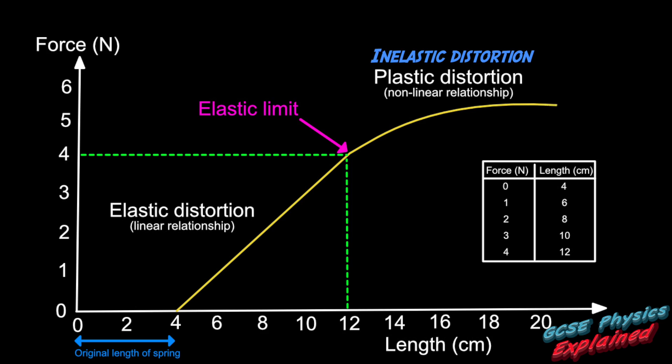And now the spring has been permanently distorted. The original length of spring is the length of the spring when the force on it is zero newtons. You can see here the original length of the spring was four centimeters.